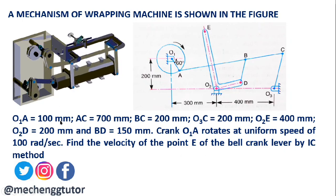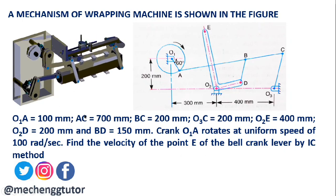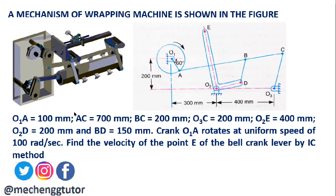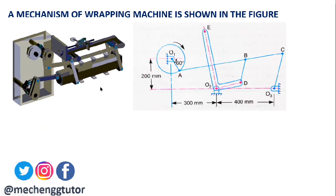We need to find the velocity of point E of the bell crank lever using the instantaneous center method. Let us see how to solve this problem.